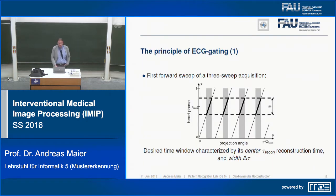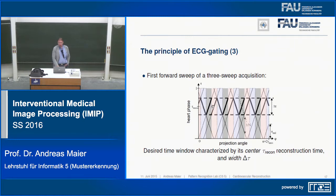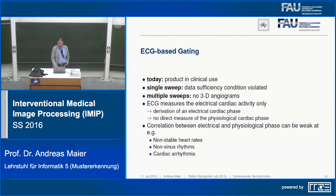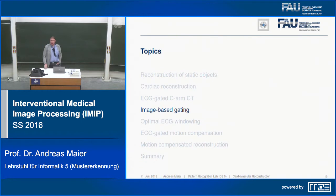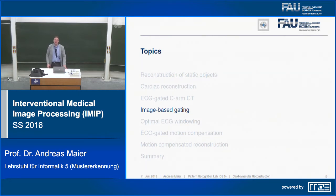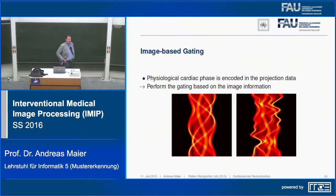The idea from Lauritsch and Fahrig is to create multiple sweeps — rotating the C-arm back and forth — acquiring more and more data of the same heart phase until you cover the entire angular range. You can select these projections for reconstruction, and this is available as a clinical product. However, if the heart is affected by disease, it may not beat perfectly periodically, which is why people came up with additional ideas, including image-based gating.